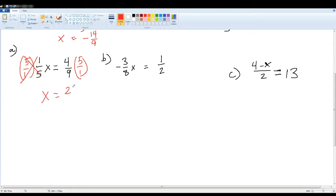Awesome. If you made it a mixed number, great. You would have had what, 2 and 2 ninths? That's fine as well. Okay, for b, you should have multiplied both sides by negative 8 over 3. That's the reciprocal.